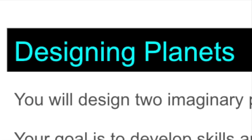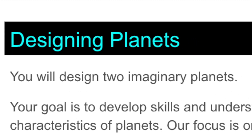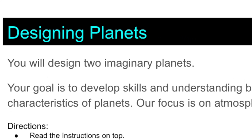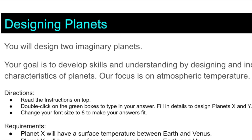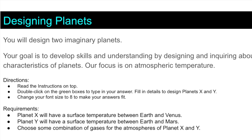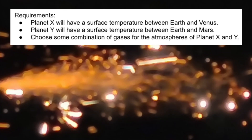Now use what you've learned to design two imaginary planets. Your goal is to develop skills and understanding by designing and inquiring about characteristics of planets. Our focus is on atmospheric temperature. Planet X must have a surface temperature somewhere between Earth and Venus. Planet Y must have a surface temperature between Earth and Mars. Choose some combination of gases for the atmospheres of Planet X and Y — choose the right gases so that you don't have a planet that's too hot or too cold.